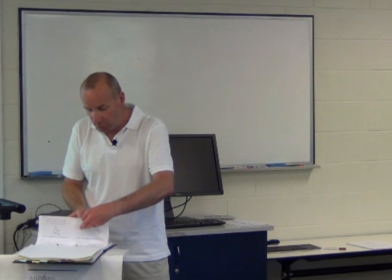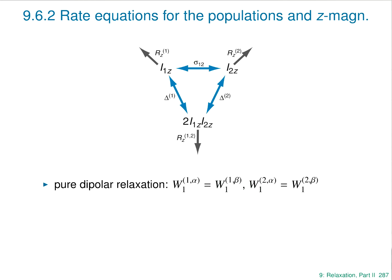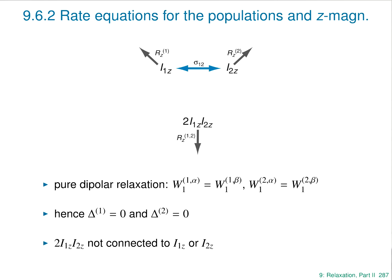What these differential equations are saying is: we've got two spins, but they're not isolated. What happens on spin 1 affects spin 2 and vice versa — they're connected, particularly via the sigma term, which turns out to be absolutely crucial. Now, if we stick to only dipolar relaxation, it turns out that the rate constants delta-1 and delta-2 are zero. So those two arrows disappear and we can forget about the 2I1Z·I2Z term, because it's no longer connected to I1Z and I2Z. This simplifies things considerably.